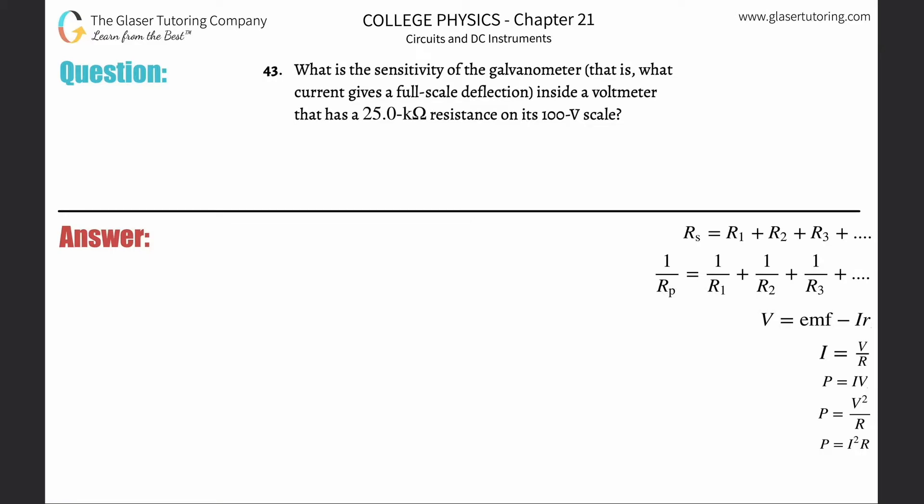Number 43: What is the sensitivity of the galvanometer? That is, what current gives a full-scale deflection inside a voltmeter that has a 25 kilohm resistance on its 100-volt scale? In other words, if the scale is 100 volts and there's a 25 kilohm internal resistance inside this galvanometer, we're